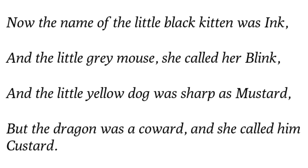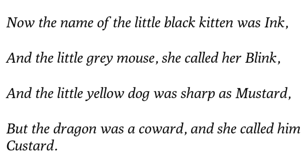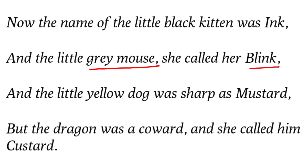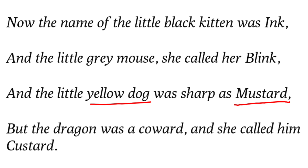Moving ahead, there is a description of the naming of the pets. Belinda had named the little black kitten 'Ink'. The little grey mouse she called 'Blink'. And the little yellow dog — that she called 'Mustard' — had a sharp yellow color like mustard seed, which is yellow-colored. So the yellow dog's color resembled mustard seed, hence the name Mustard.